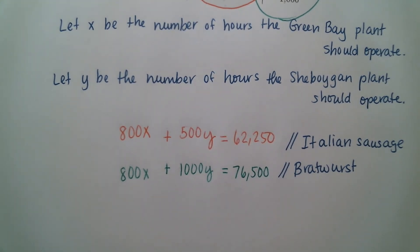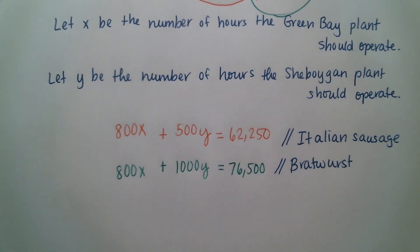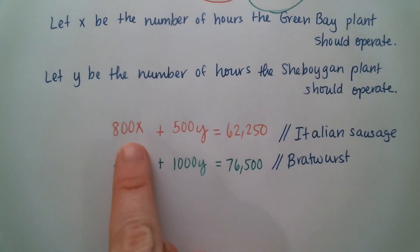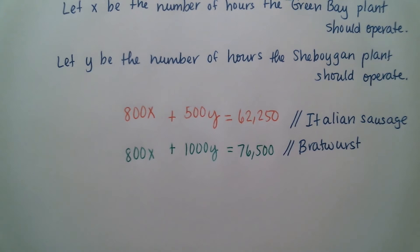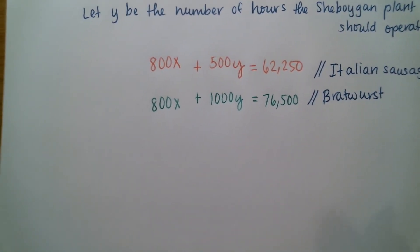That is our system. Now we need to solve it. Numbers are too big for graphing, and substitution would produce fractions. Elimination is the best bet. Notice both equations have 800X, so if we multiply either equation by negative 1, we can easily eliminate the X term. I'll solve by elimination.